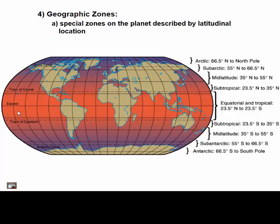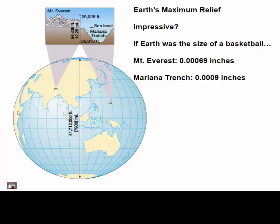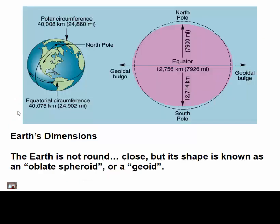We have different geographic zones based on latitude. We also have relief — the highest point and the lowest point — about 35,000 feet below sea level up to about 29,000 feet above sea level. Given the circumference of the earth is about 24,000 miles, that difference isn't actually that large. The earth technically isn't a sphere; it's what we call an oblate spheroid, or a geoid, meaning the equatorial circumference is slightly greater than the polar circumference — it has an equatorial bulge.